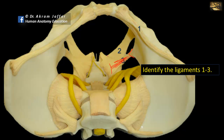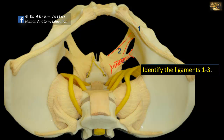Ligament 2 is the bigger ligament and extends between the sacrum and the tuberosity of the ischium — the ischial tuberosity is not shown here — so ligament 2 is the sacrotuberous ligament. To summarize: the one extending between the sacrum and the spine is the sacrospinous, and the one extending between the sacrum and the tuberosity is the sacrotuberous. These two ligaments convert the notches into foramina: the lesser sciatic notch below the spine into the lesser sciatic foramen, and the greater sciatic notch above the spine into the greater sciatic foramen.